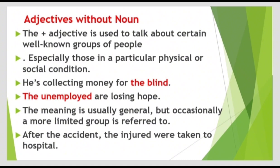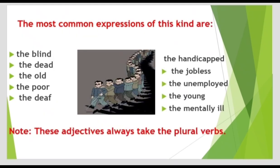Another example: 'The unemployed are losing hope.' Here 'the unemployed' is used as a noun — it is an adjective but is used as a noun. The meaning is usually general, referring to all people in that condition.